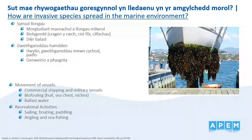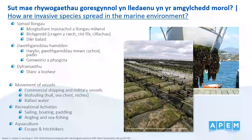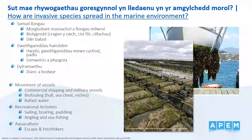Recreational activities are another pathway for the introduction and spread of INNS in the marine environment. INNS can stow away on boats, for example as hull fouling, or on equipment like life jackets used for water sports or nets used for fishing and angling. Some INNS that are cultured for commercial purposes may escape from aquaculture sites. INNS might also hitchhike with cultured species as stock is moved from one location to another. This is thought to be one of the ways that the American slipper limpet was introduced to the UK.